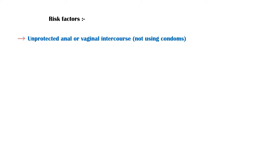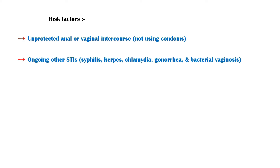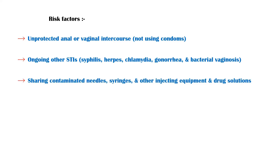Risk factors for HIV infection include unprotected anal or vaginal sexual intercourse, such as not using condoms. Ongoing other sexually transmitted infections such as syphilis, herpes, chlamydia, gonorrhea, and bacterial vaginosis also increase risk. Additionally, sharing contaminated needles, syringes, and other injecting equipment and drug solutions during drug misuse is a significant risk factor.